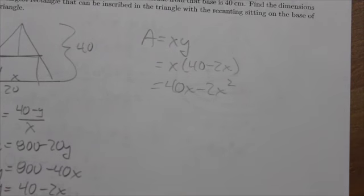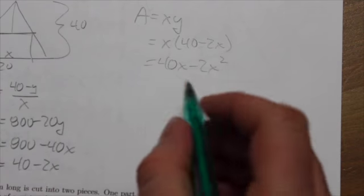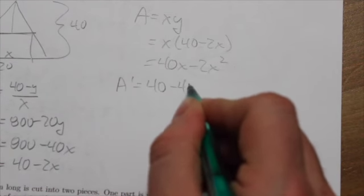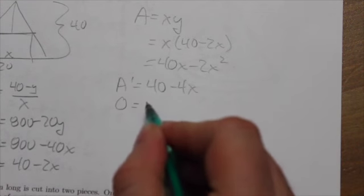Now, you might recognize this sort of question from math 20. You would have done stuff like this where you completed the square on this. But taking the derivative is a whole lot easier. Set the derivative equal to 0.